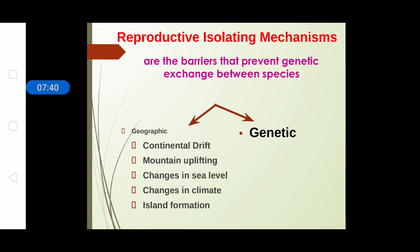Reproductive isolating mechanisms can be classified into two major aspects: geographic and genetic. In geographic isolation mechanisms, we have several theories — like continental drift, which states that once all continents were conjoined as Pangea, but due to earthquakes and movement of tectonic plates they separated, causing separation of animal groups that then gave rise to new species over time due to environmental factors.